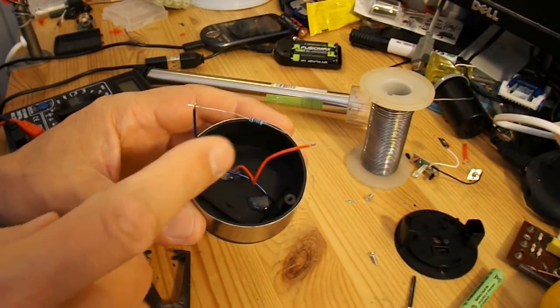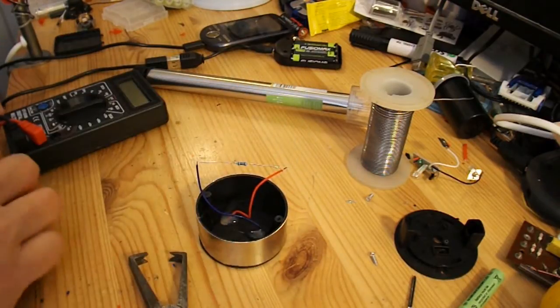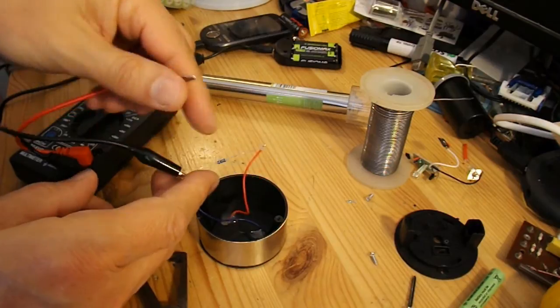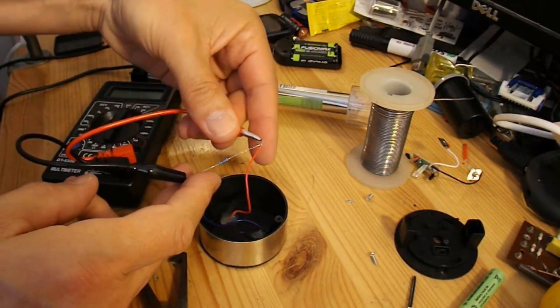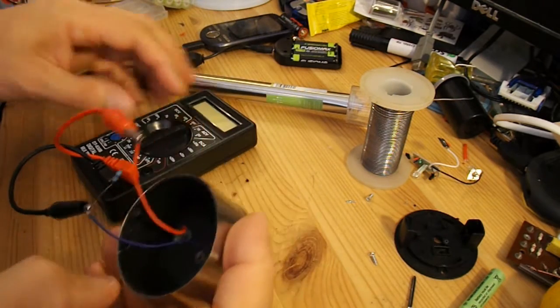I've just very quickly soldered a 1K resistor straight across the solar panel, so we can measure the voltage under some sort of load.